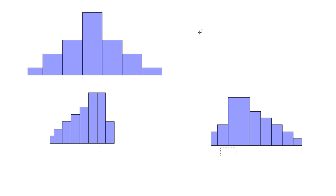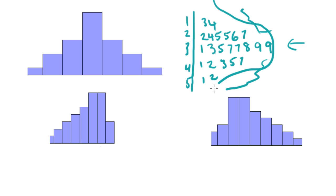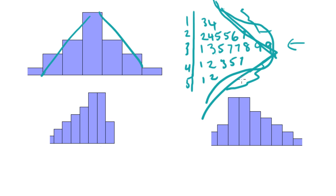Shape works the same for a stem and leaf plot. A symmetrical stem and leaf plot has the bulk of the data in the middle — there are more numbers sitting against the middle stem value — and then it's kind of balanced each side. If you look at it sideways, it's like a little tent shape — it goes up the hill and then down the hill. So this would be symmetrical.